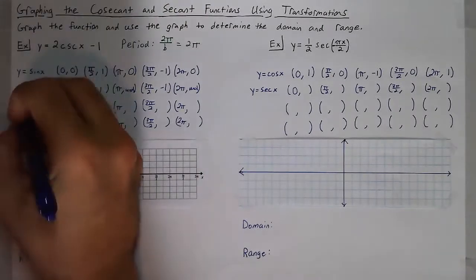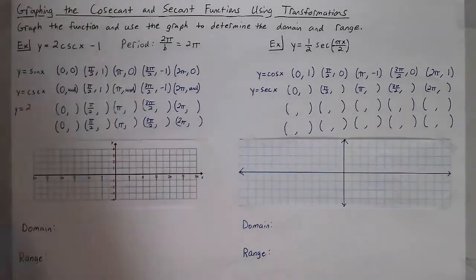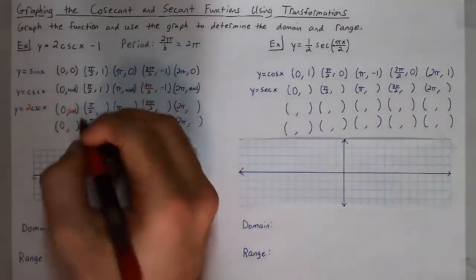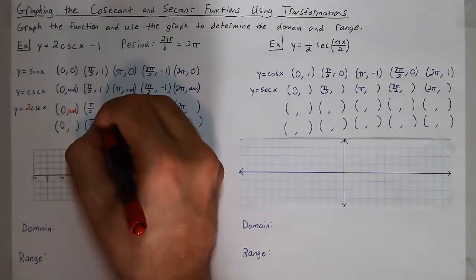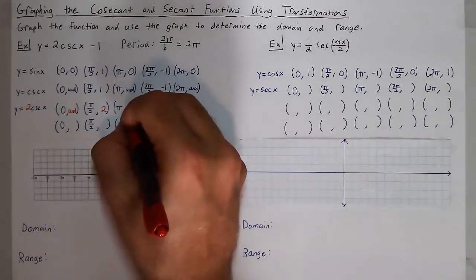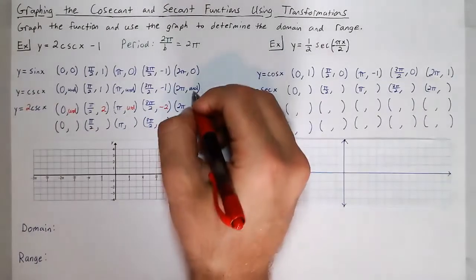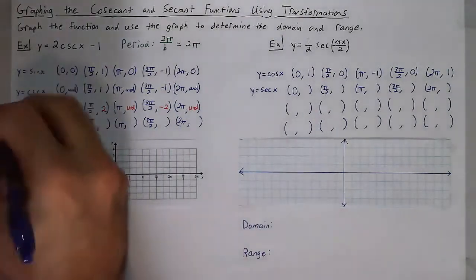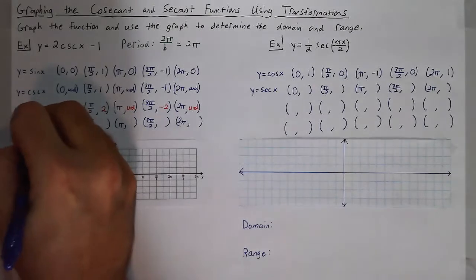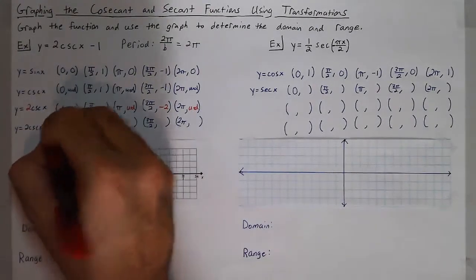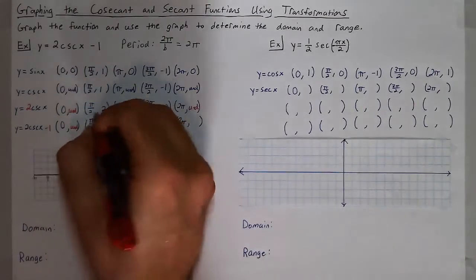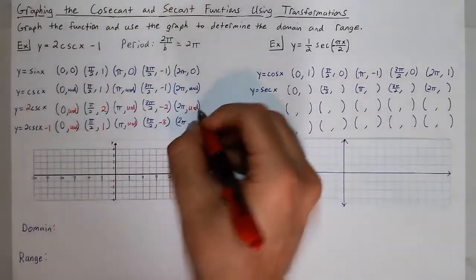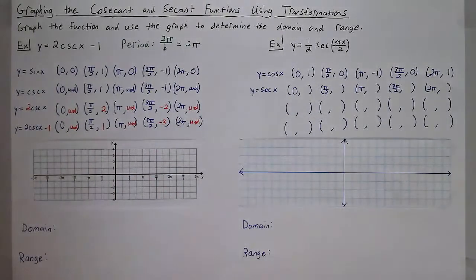Looking at y equals 2 cosecant of x: undefined times 2 is still undefined; 1 times 2 is 2; undefined times 2 is still undefined; negative 1 times 2 is negative 2; undefined times 2 is undefined. Now subtracting 1, for y equals 2 cosecant of x minus 1: undefined minus 1 is still undefined; 2 minus 1 is 1; undefined minus 1 is undefined; negative 2 minus 1 is negative 3; and undefined minus 1 is undefined.